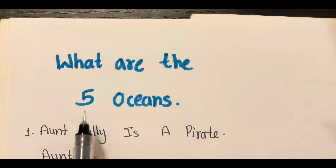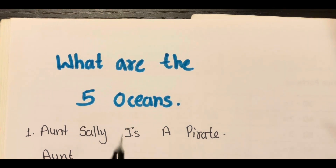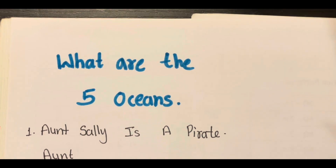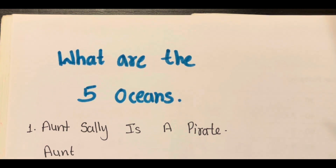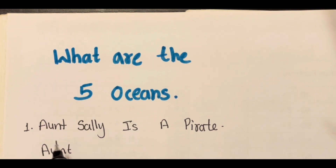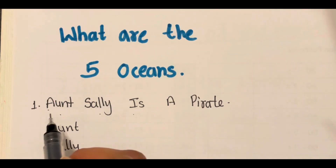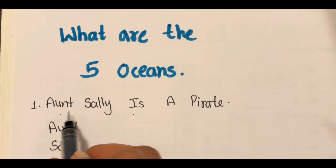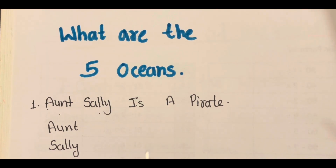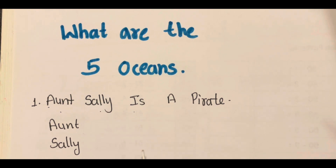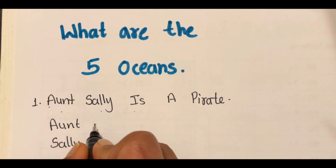Do you know we have five oceans on the earth? How do you remember the name of those oceans? There are two sentences to remember the oceans. Aunt Sally is a pirate. The first letter of each word in this sentence is the name of an ocean.